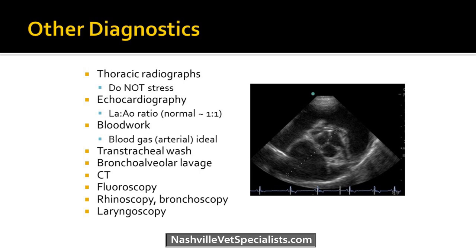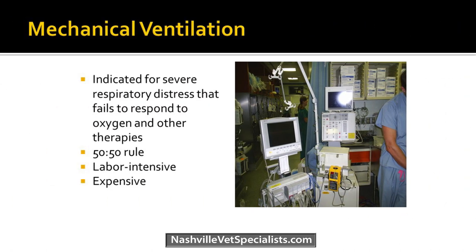If the pet can't be stabilized, sometimes mechanical ventilation is needed. Typically, if PaO2 is less than 50 and PaCO2 is greater than 50, the patient should probably be on a mechanical ventilator — which is labor-intensive and expensive. At your clinic, you can always manually ventilate the pet until the owner decides what to do or you get more information.